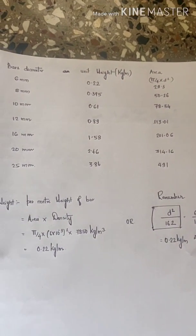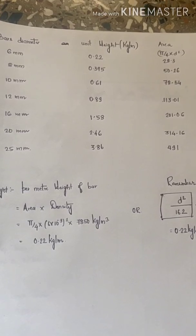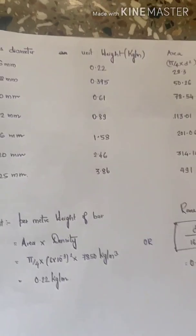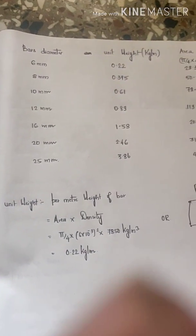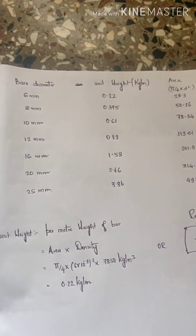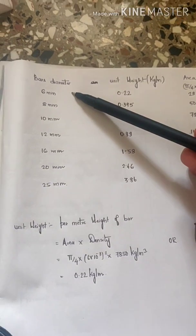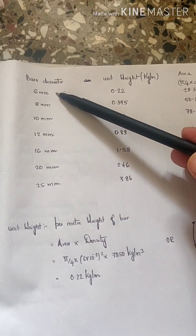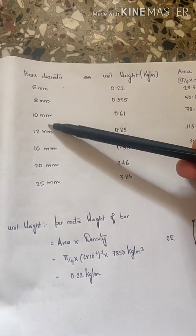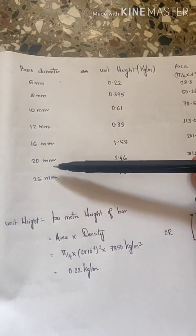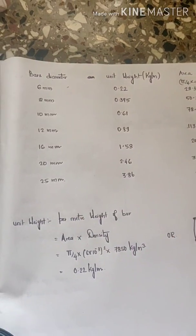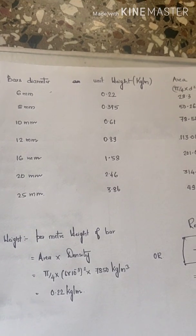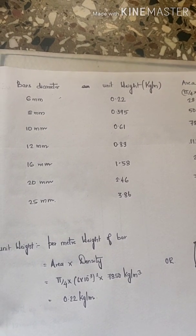Bar diameters used in construction sites and available in the market readily are starting from 6mm, 8mm, 10mm, 12mm, 16mm, 20mm, and 25mm. These are the readily available bar diameters. In special cases we go for using 18mm diameter bars.